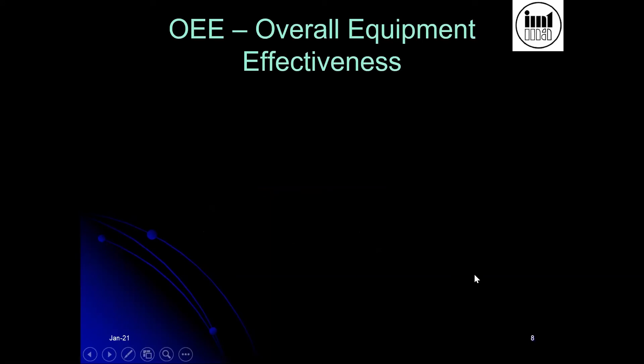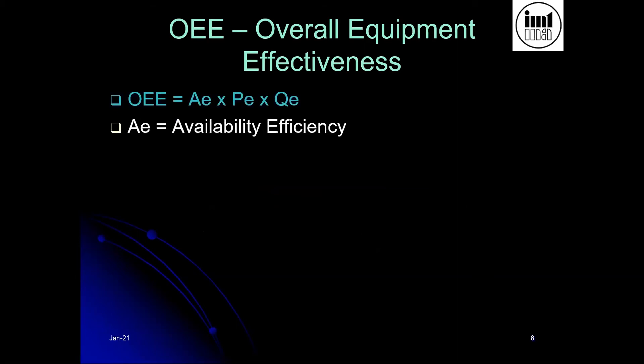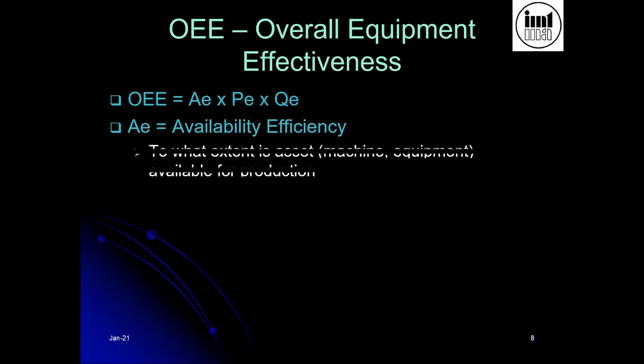Now we move on to the actual formula for OEE, or overall equipment effectiveness. OEE is the multiplication of three factors known as AE, PE, and QE. AE stands for availability efficiency — to what extent is the asset, whether machine or equipment, available for production?